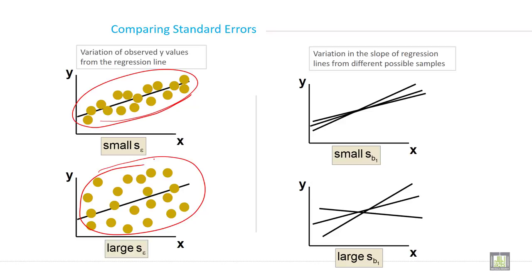Here variation in the slope of regression lines from different possible samples. See the variation here and here. It is here zero variation and large variation like this. The gap is heavier, the gap is big. So it is large variation here, and here also, in comparison to this one, it is the bigger large SB1.